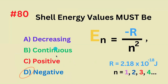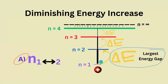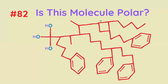Which energy gap is the largest? The gap between shell 1 and 2, between 2 and 3, between 3 and 4, or between 99 and 100? The correct answer is between 1 and 2, because the energy increase gets smaller and smaller as N increases and goes to infinity.